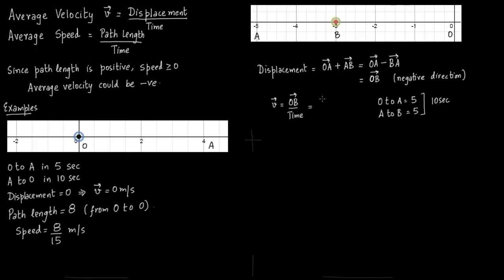So OB vector is minus 3. So it has direction which is minus sign and magnitude which is 3. So here minus 3 by 10 is the velocity.